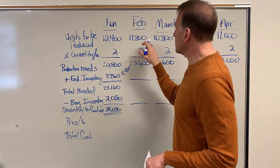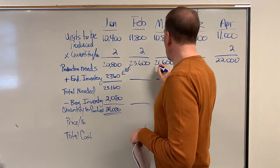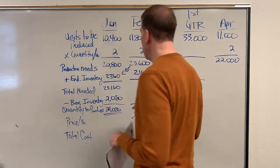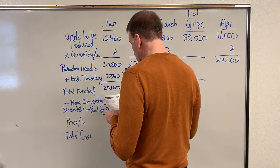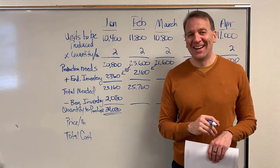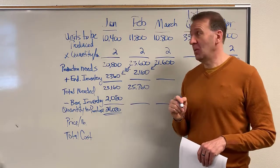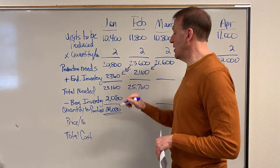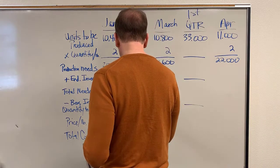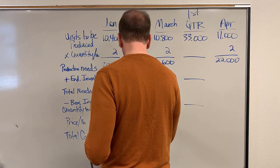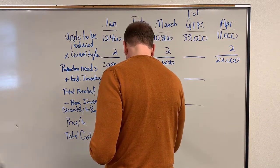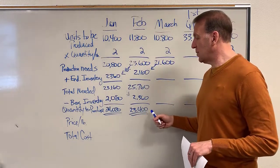For February: 11,800 times two gets us to 23,600. We need 10% in ending inventory, so 10% of the March number 21,600 gives us 2,160 as our desired ending inventory. We add these together to get 25,760. Our beginning inventory is the ending inventory from January — 2,360. So we subtract that out, getting 23,400 as the pounds of potatoes we plan to purchase in February.